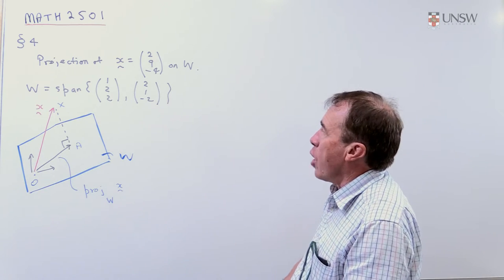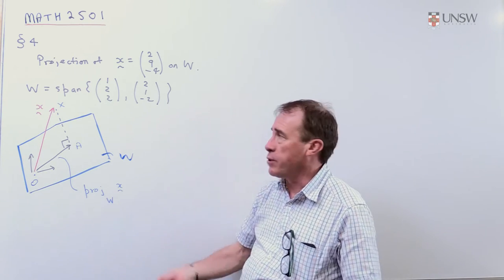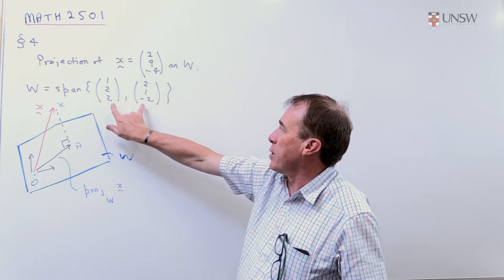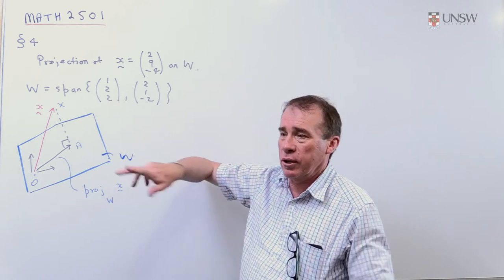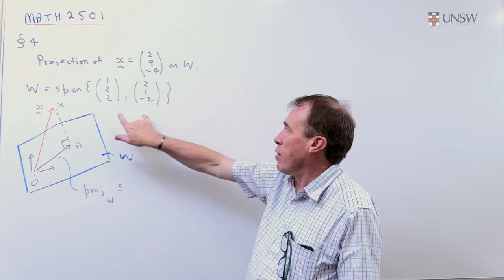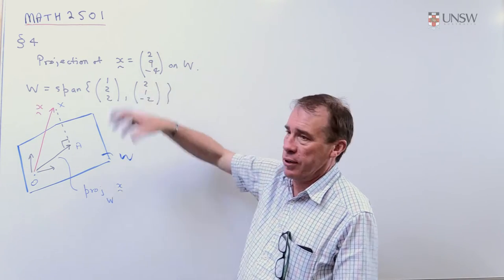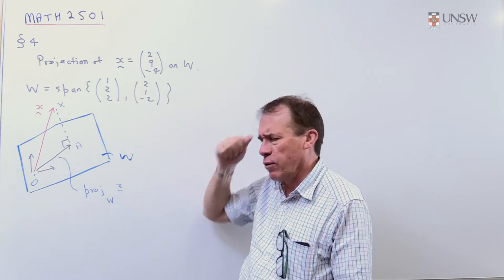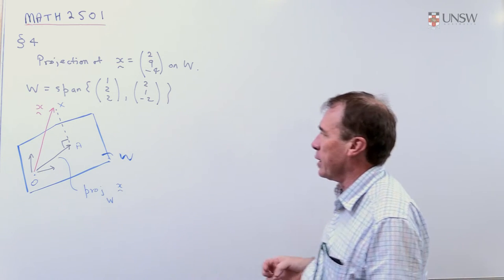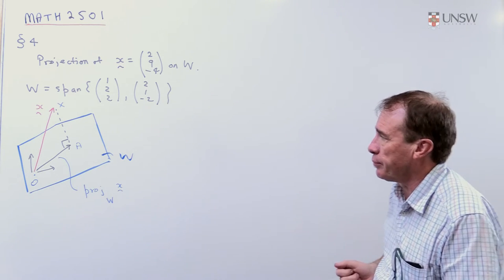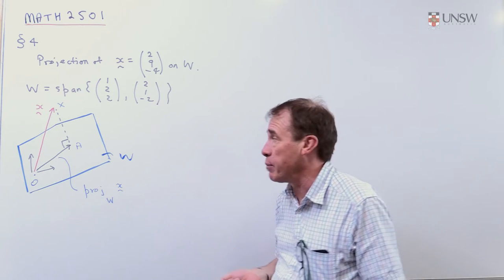There's a way of writing down a magic formula where you construct a complicated matrix from these two and multiply it by this and get the answer. It's all very complicated and not a particularly nice way of attacking the problem. It doesn't give you much insight into what's happening either.